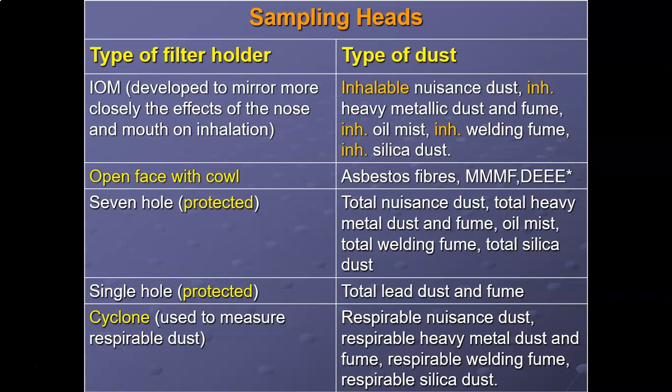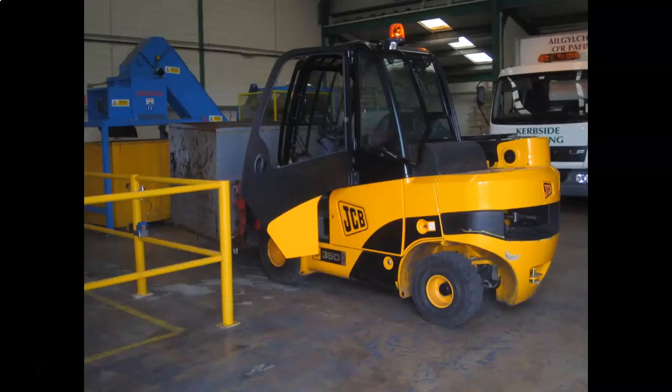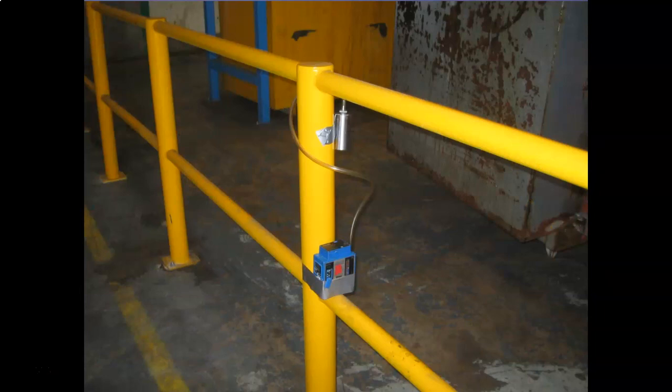This has come up in exams before. They could ask you to specify the type of sampling head to be used. For inhalable dust, use the seven-hole head filter. For respirable dust, use the cyclone. For something larger like asbestos, use the open face with a cowl. A cowl is a cylindrical shape, as opposed to the funnel-like shape of the cyclone.